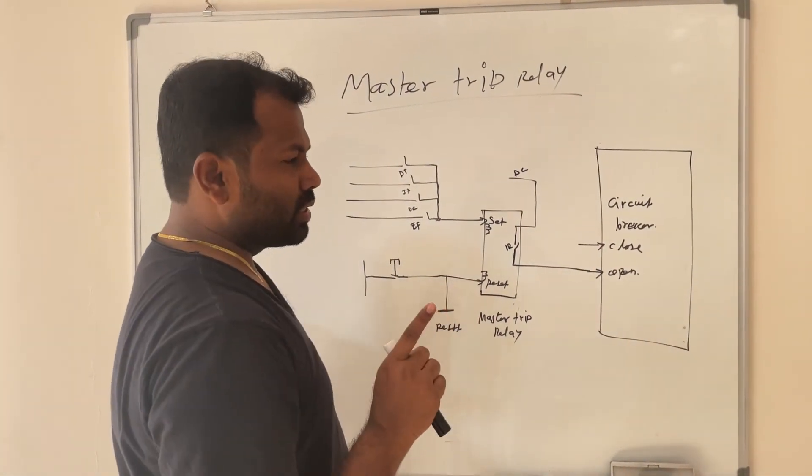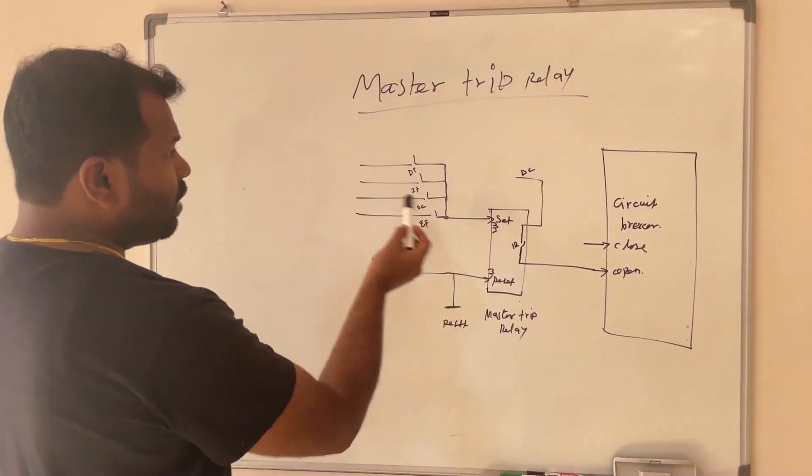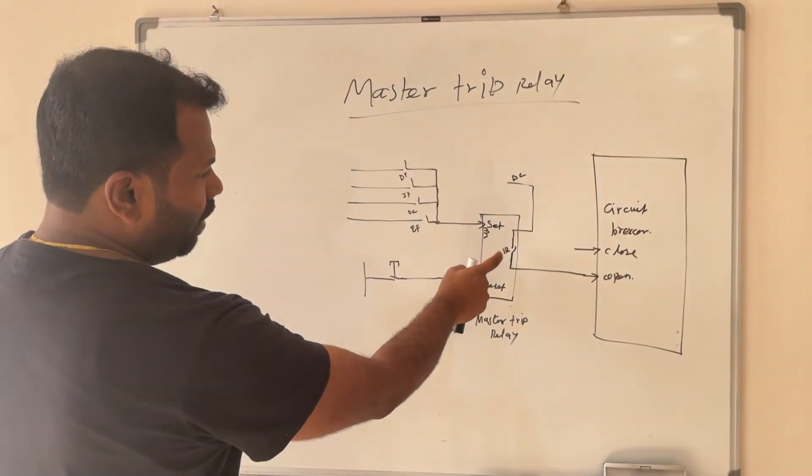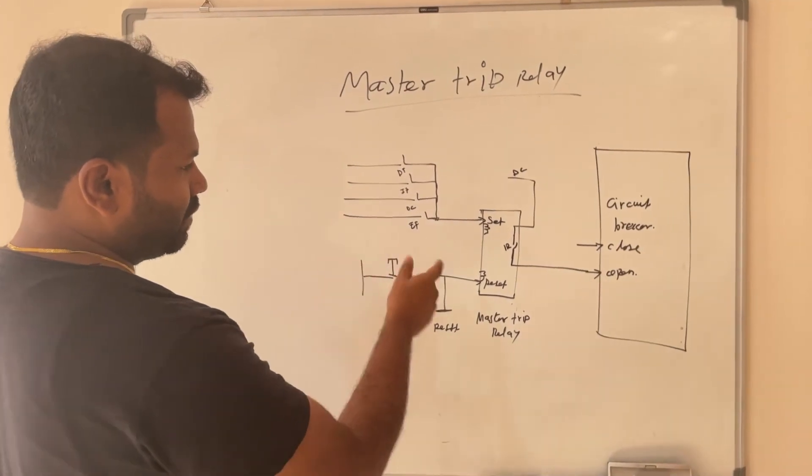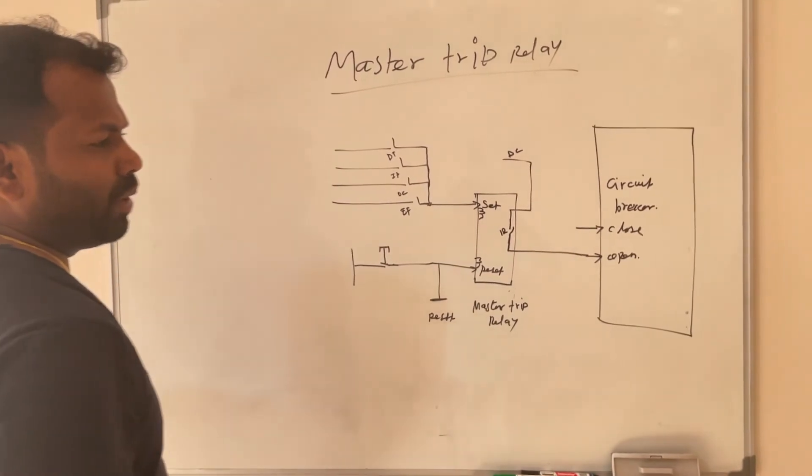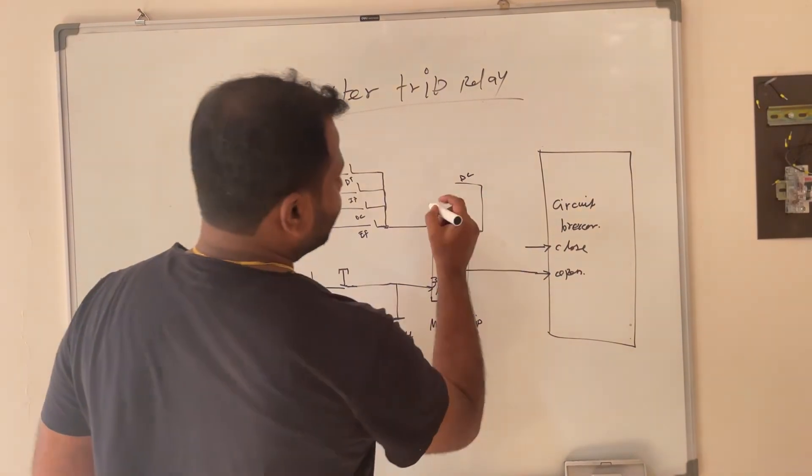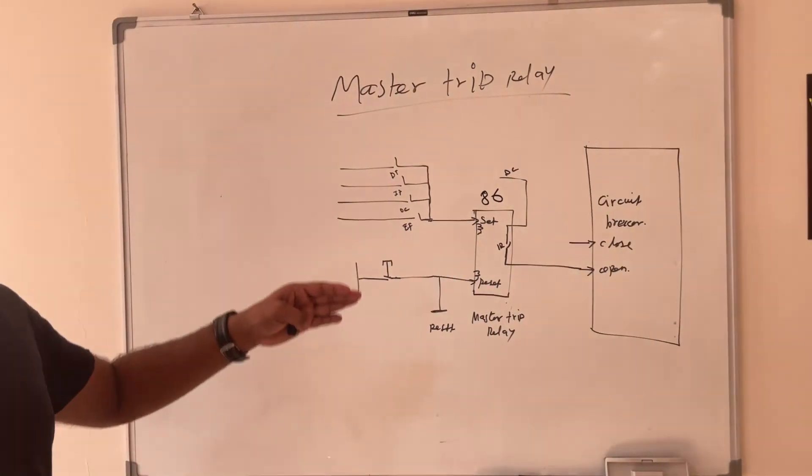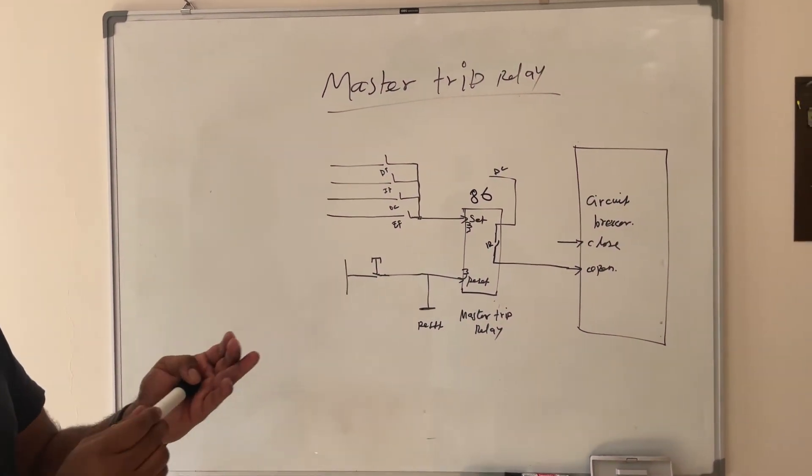From any external protection relay, this is the only one relay that will receive the fault command or trip signal, and this will decide to open or trip the breaker. That is called master trip relay and this ANSI code is 86. This is the most used relay in major substations.